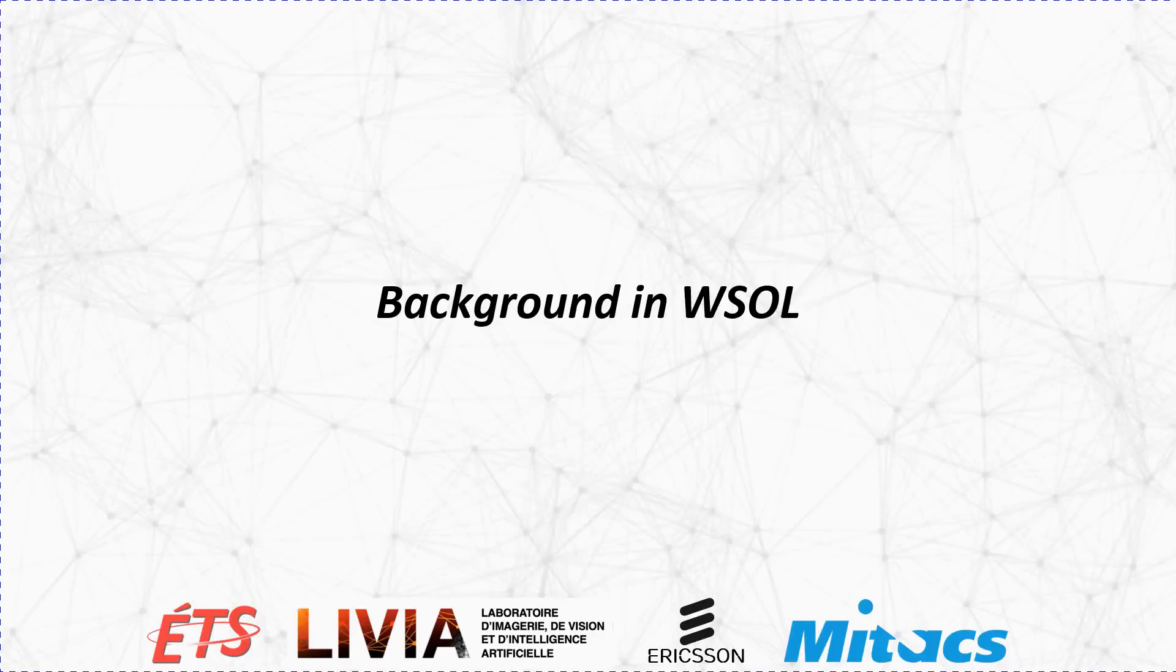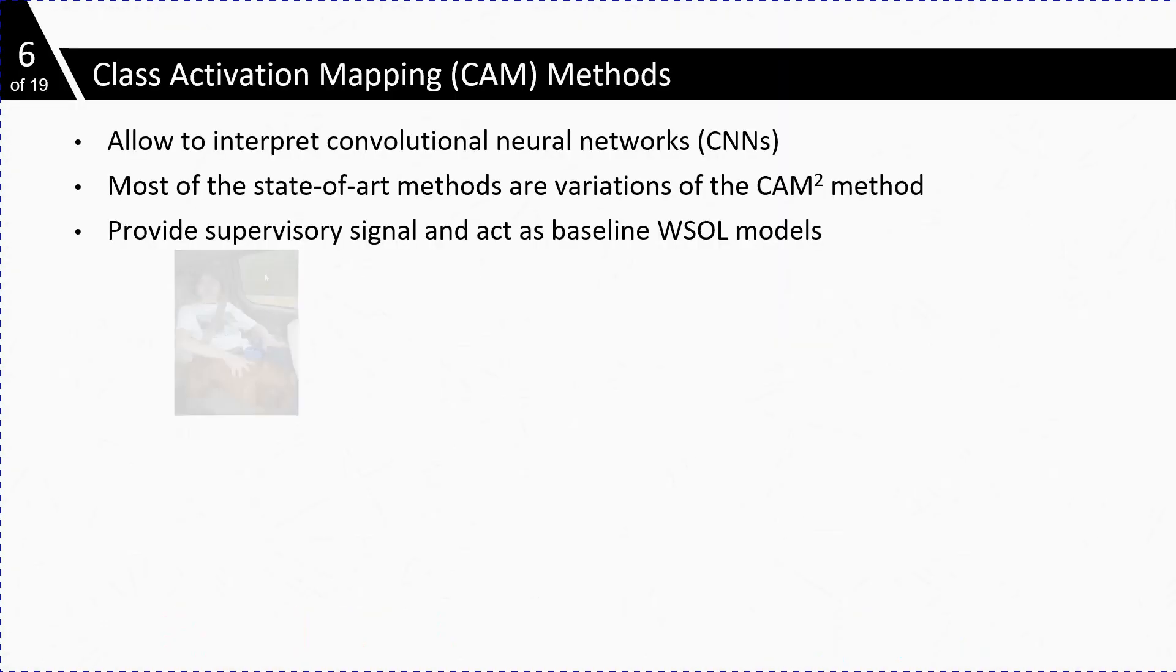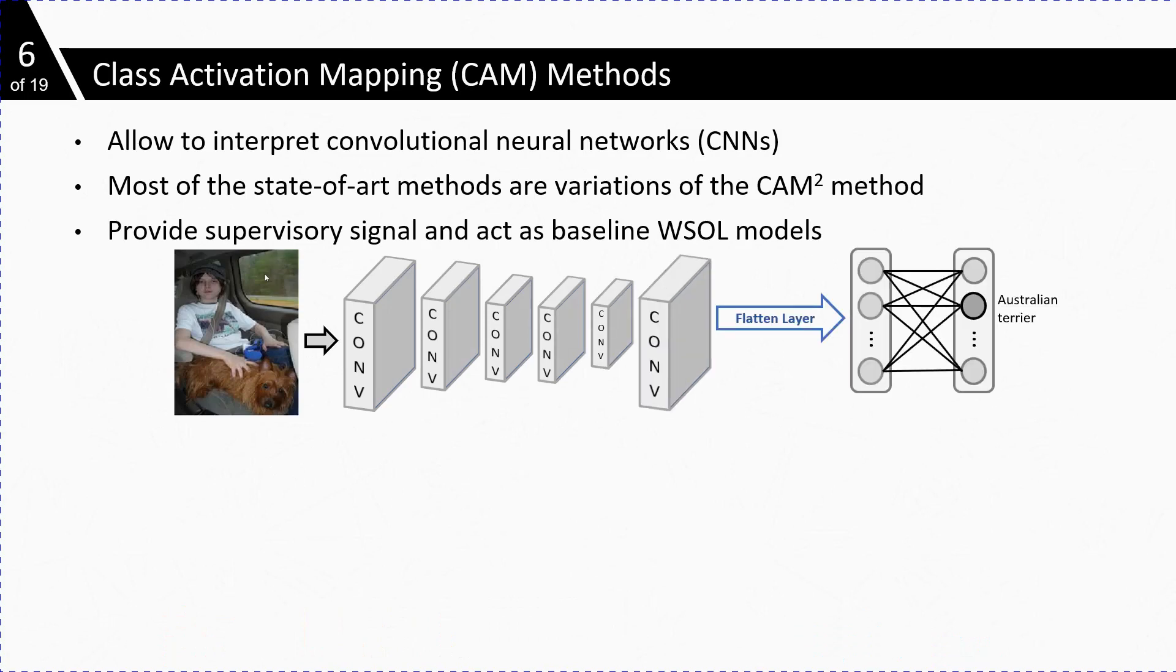Here is the background on weakly supervised object localization. Class activation map was introduced to interpret convolutional neural networks. Additionally, class activation maps act as a baseline for weakly supervised object localization that allow us to peek into the network. Most of the methods are a slight variation of CAM. Also, some methods use them as pseudo-labels.